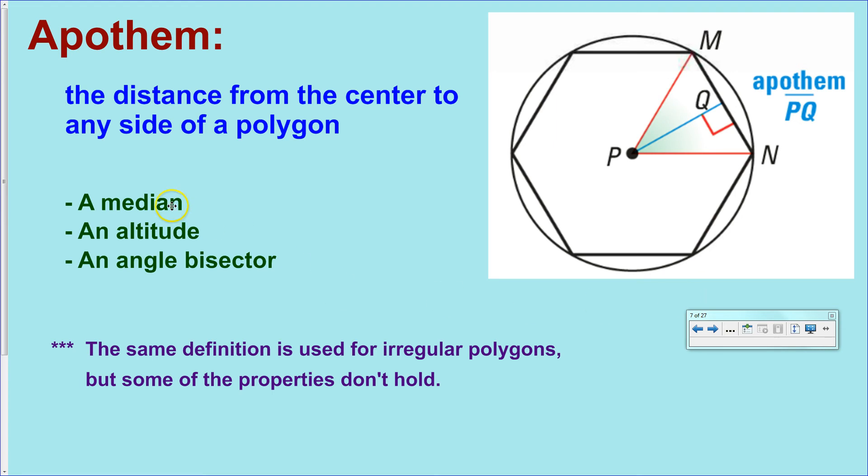First off, it is a median. It intersects the midpoint of segment MN. It is an altitude, basically by definition. It has to go along a perpendicular path, and it has to go through that vertex because of the way this was constructed. And, in this case, since it is a regular polygon, it is also bisecting this angle.